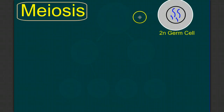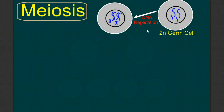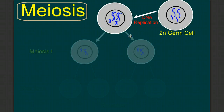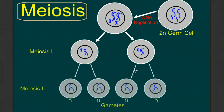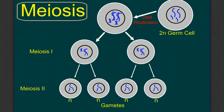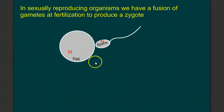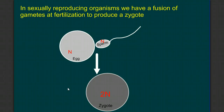To recap: we have one diploid germ cell that during S of interphase replicates its DNA, then enters meiosis. In meiosis I, we reduce our chromosome number by half and reduce our ploidy from diploid to haploid — but with chromosomes still in the duplicated state, we need meiosis II to form our four haploid gametes. We can then use these haploid cells during sexual reproduction, so that a haploid egg is fertilized by haploid sperm to produce a diploid zygote and restore our chromosome number for the next generation.